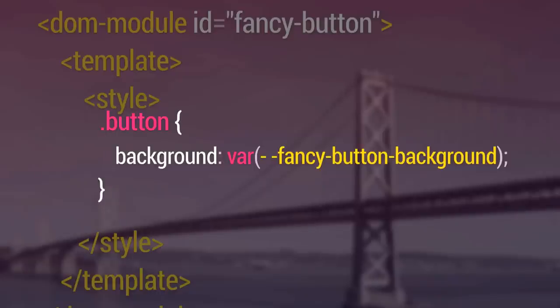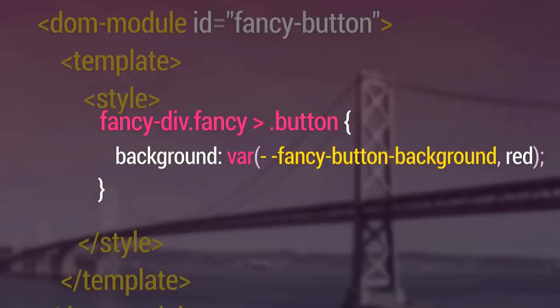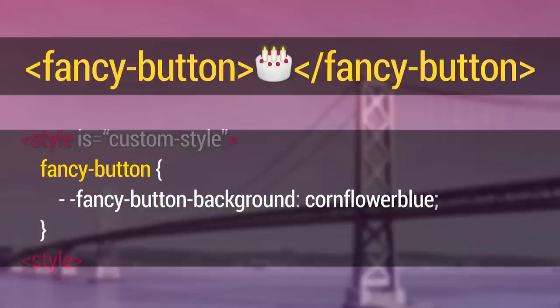If we look at our element from before and it has a style giving the background of the button — what if instead of hard-coding the color, I give it a variable, a custom property? I'll call it `--fancyButtonBackground`. FancyButton is the element I'm styling — this sounds pretty legit. I can even give it a default value, so if you, the user of this element, don't provide a color, I'll just use red. I can apply this anywhere in the scope of my button, even deep in nested divs. And then when you, the user of the fancyButton, want to style it, all you have to do is use the property name and give it a value — CornflowerBlue, which is a legal CSS color name.